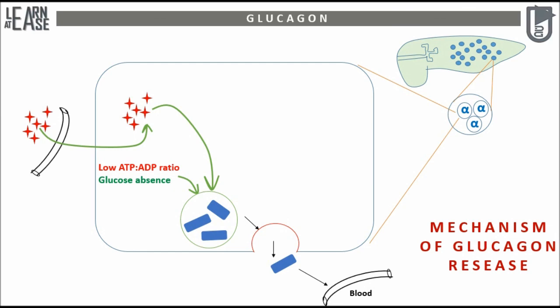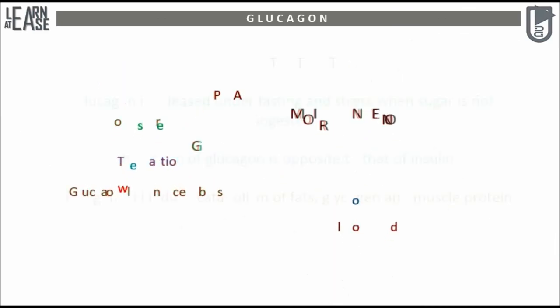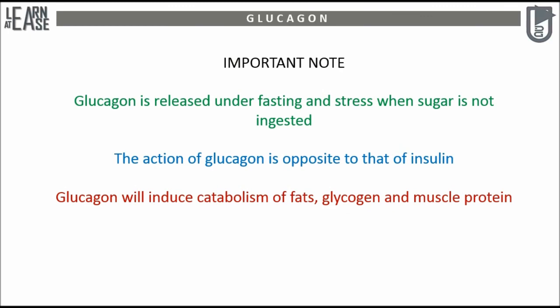It is to be remembered that glucagon is released under fasting and stress when sugar is not ingested, and the action of glucagon is opposite to that of insulin. Lastly, glucagon will induce catabolism of fats, glycogen, and muscle protein, which will be covered in upcoming videos.